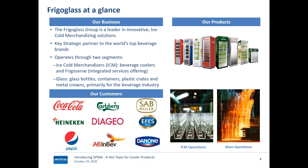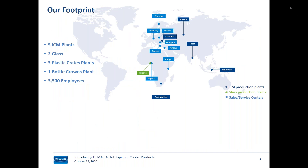I'm the manufacturing director of the ICM division of Frigoglass, currently connecting from Athens, Greece, where the company is headquartered. Our footprint spans three continents — Europe, Asia, and Africa — with 11 production plants and several sales offices and service centers. We offer vertical integration services, taking care of placement and after-sales service of our products for the beverage industry. We have five plants building coolers: in Romania, Russia, India, Indonesia, and South Africa. We also have a presence in Nigeria for the glass business in Africa.